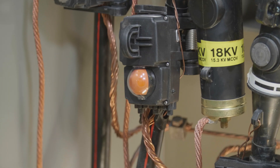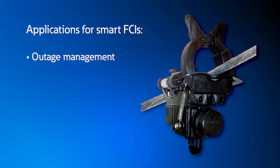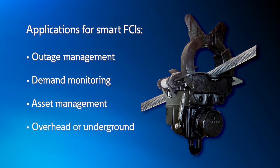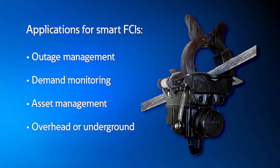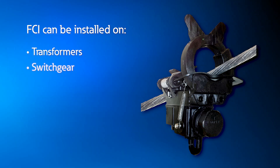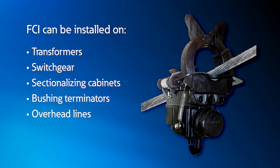FCIs range from simple, non-communicating devices to smart, communicating devices that can be used for outage management, demand monitoring, and asset management. FCIs can be set up for both overhead and underground systems. They can be installed on transformers, switchgear, sectionalizing cabinets, bushing terminators, overhead lines, and underground cable. The quantity and location of these FCIs are chosen strategically to eliminate the need for sectionalizing fault-chasing methods.